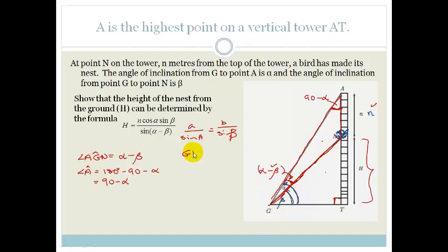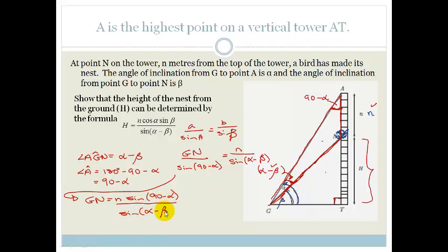So GN, GN over sine of 90 minus alpha is equal to little n over sine of alpha minus beta. Okay, so now I'm going to carry on writing here so you don't get confused. So therefore, big GN is equal to n sine 90 minus alpha all over sine of alpha minus beta.